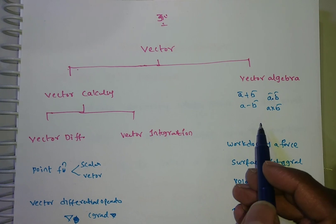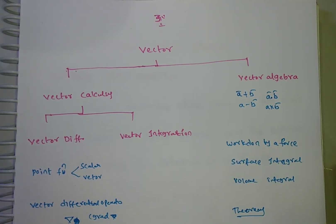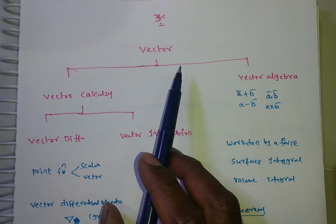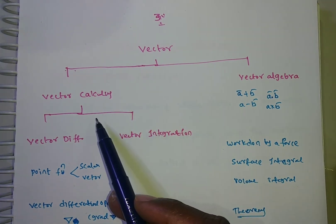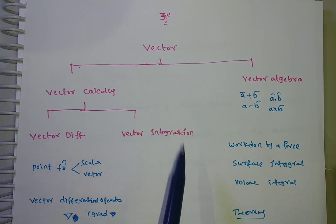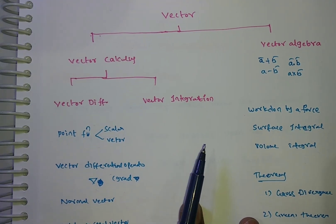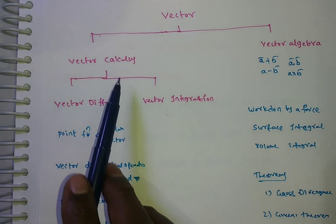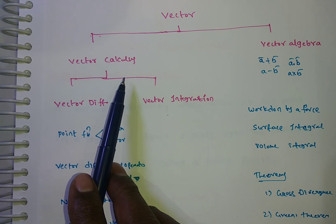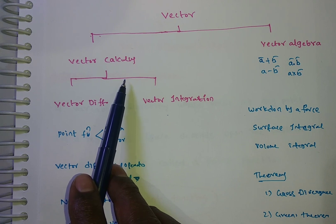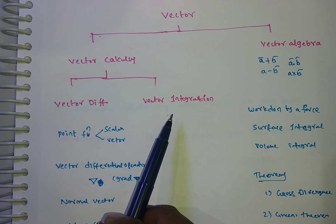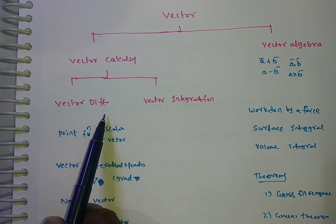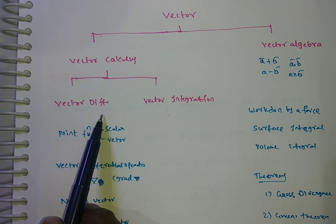Now in engineering, beyond vector algebra from 10+2, we move into vector calculus. In vector calculus, engineering students study vector differentiation and vector integration — just as in intermediate calculus we had differentiation and integration, here we have their vector counterparts. Vector differentiation means we will discuss differentiation of a function.